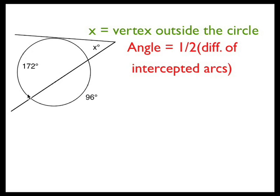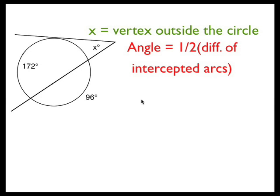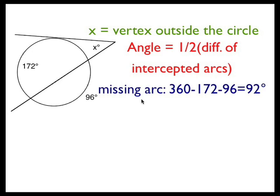The two arcs in this case would be the 172 degree arc and this missing arc right here. So in order to find that, I'm going to subtract the two arcs that I know from 360 degrees. That's because all the way around the circle is 360, so that gives the missing arc 92 degrees in measurement.